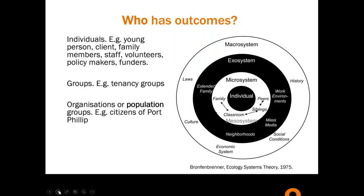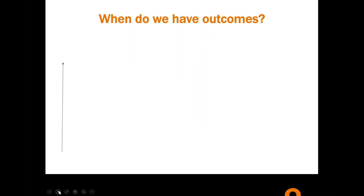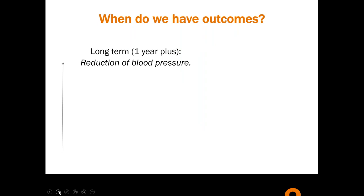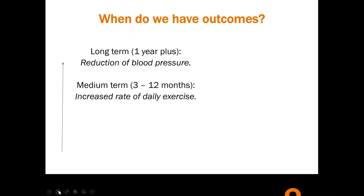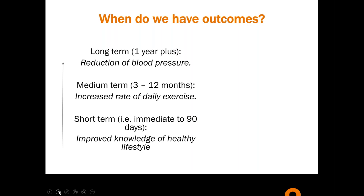When do we have outcomes? I mentioned short-term, medium-term, and long-term. Here's an example: the long-term aim of a program might be reduction in blood pressure — that's a condition. The medium-term could be increased rate of exercise, which is what we want to see happening to result in long-term change. And the short-term change might be improved knowledge of a healthy lifestyle.